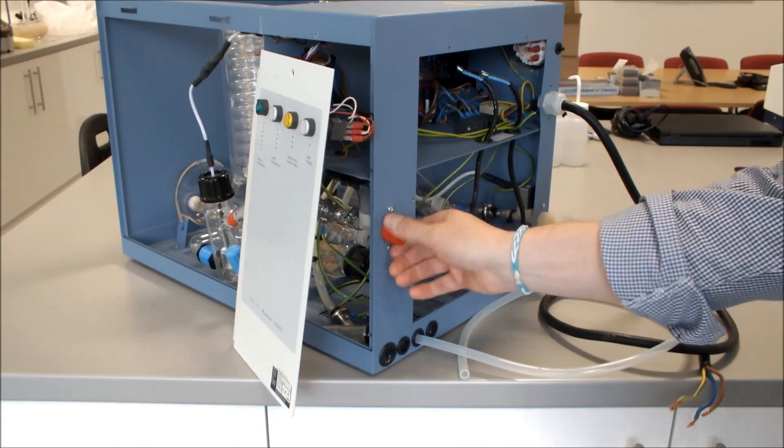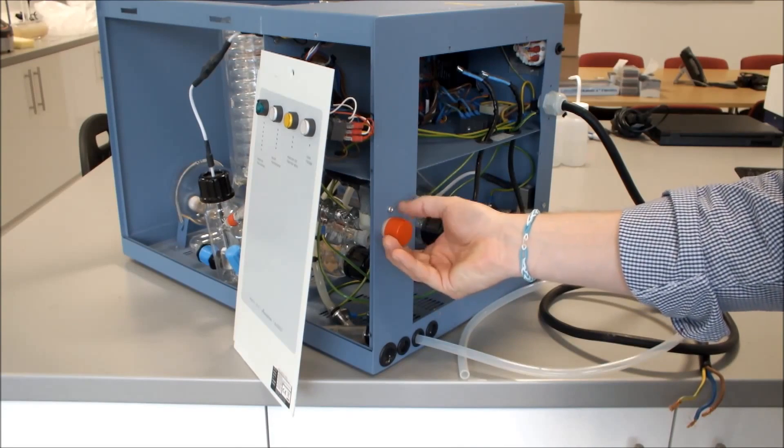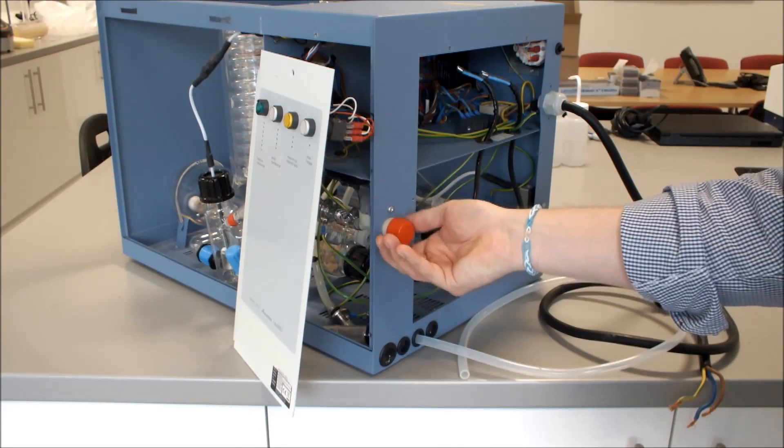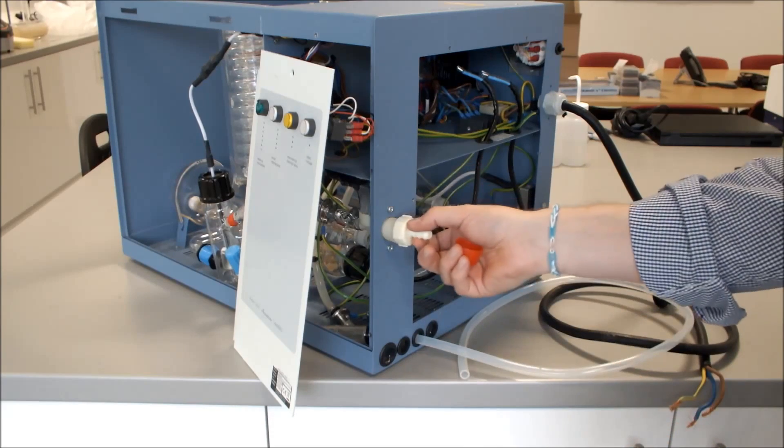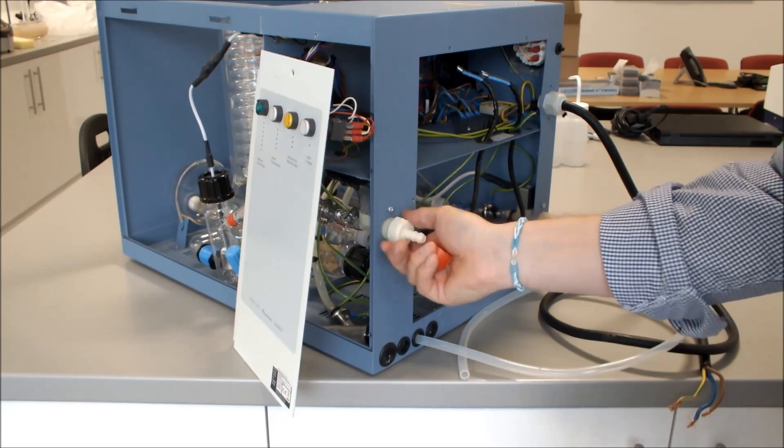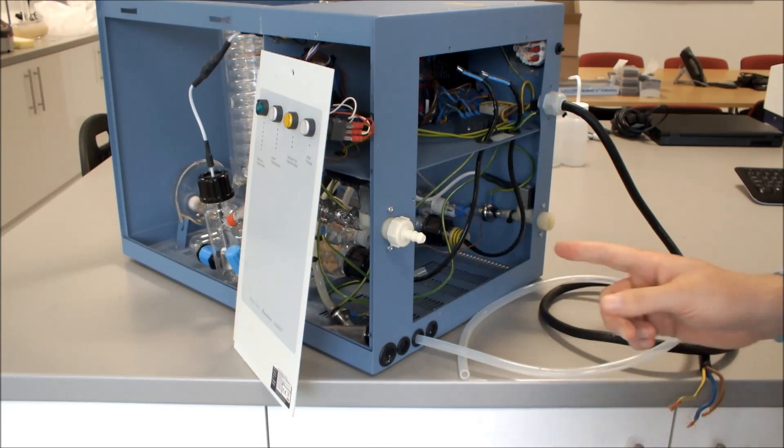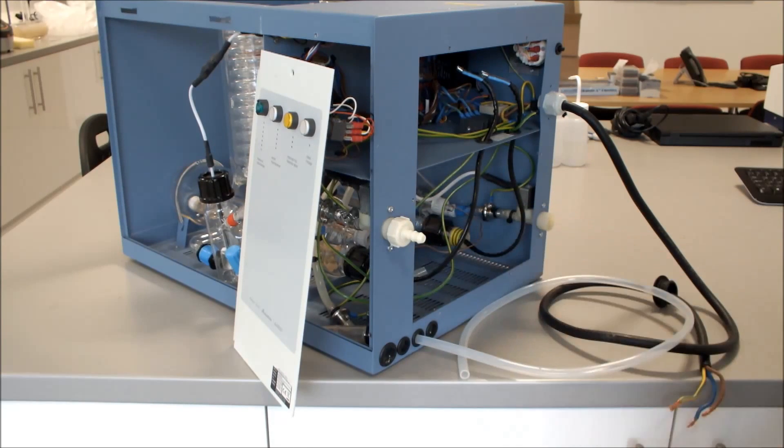We can then remove the blanking cap from our deionised water or pre-treated water inlet. You can then connect your suitable tubing for your deionised or pre-treated water.